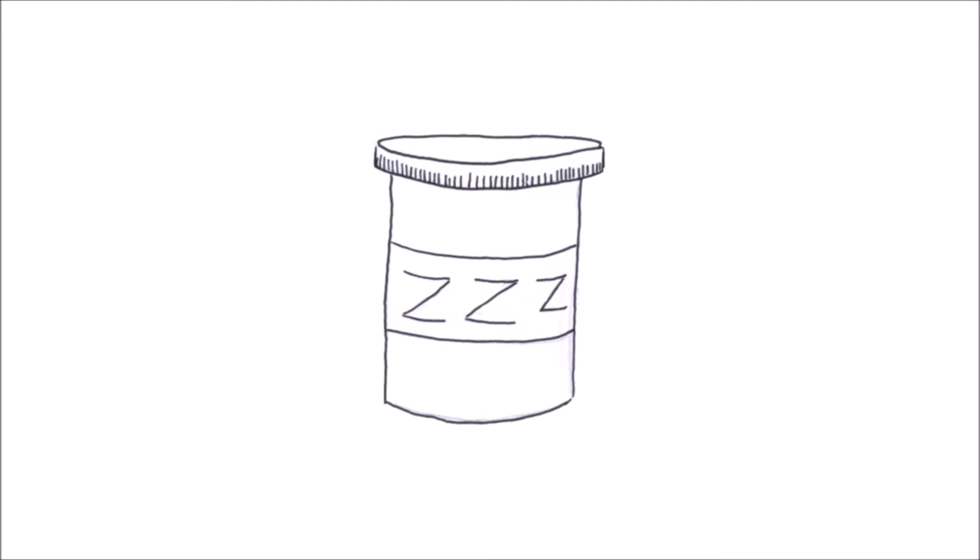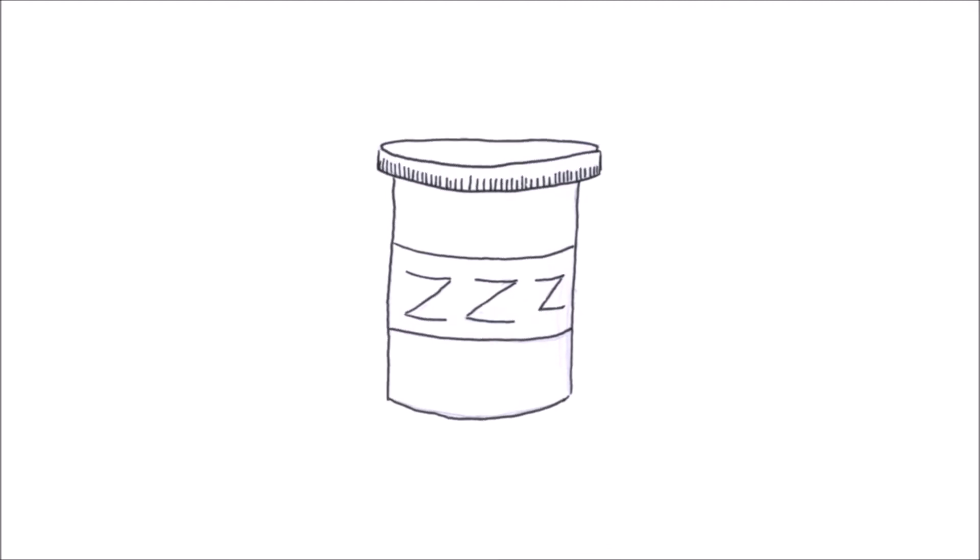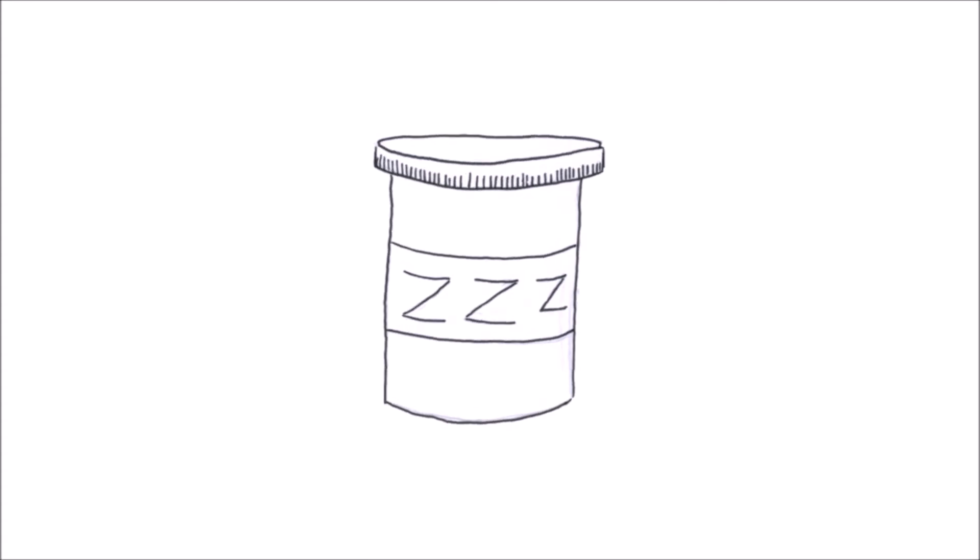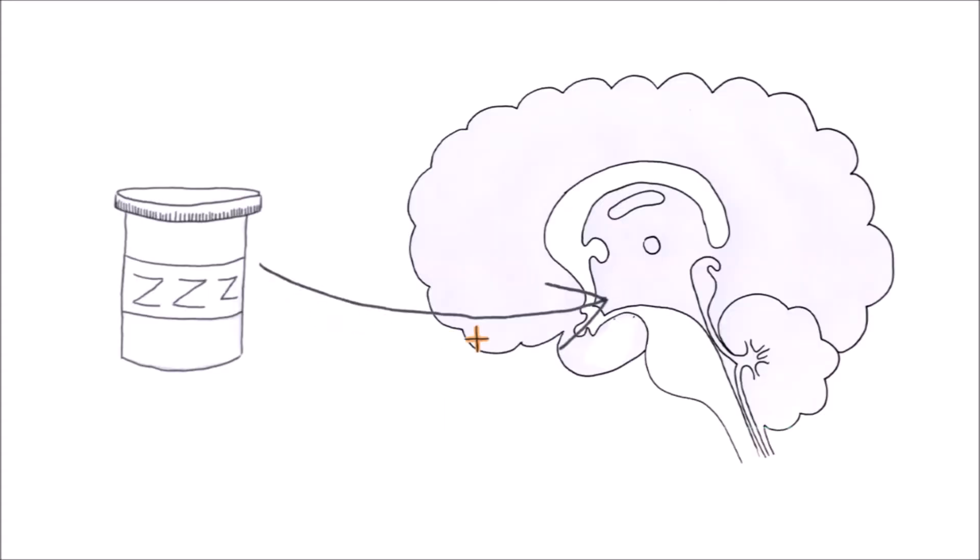The second mechanism which could be used to induce torpor are adenosine agonists. This is medication which activates the adenosine pathways in the brain. Adenosine plays an important role in regulating sleep, by promoting the brain area which is responsible for making you feel drowsy and sleepy. It is also known to play a central role in the activation of torpor.